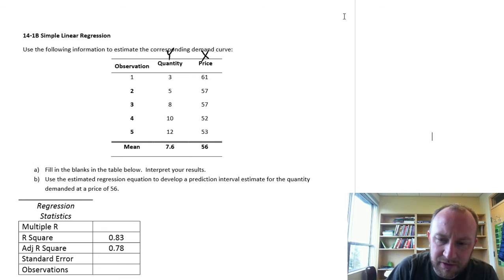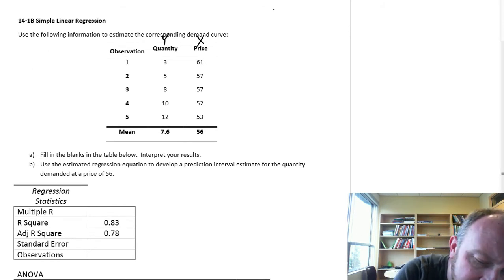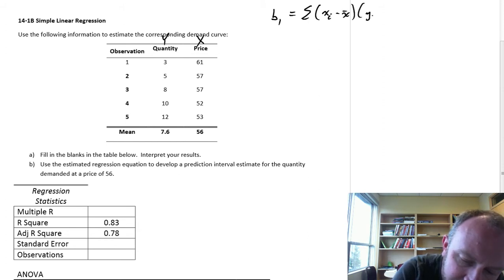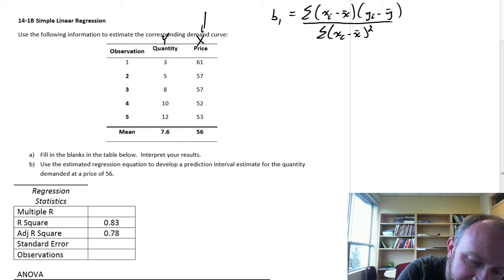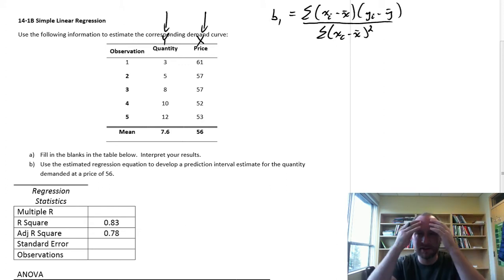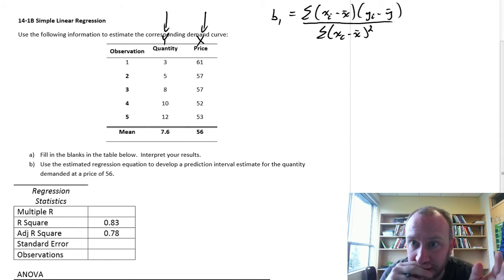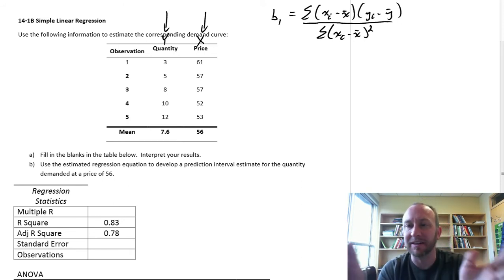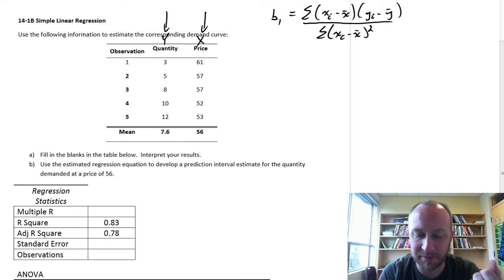Here's that formula for the slope coefficient. This is the covariance between x and y, divided by the variance in x. Make sure we don't get these mixed up: price is x, quantity is y. We'll break it up into its different parts, and once we get all the pieces of this formula, it becomes much easier to calculate.